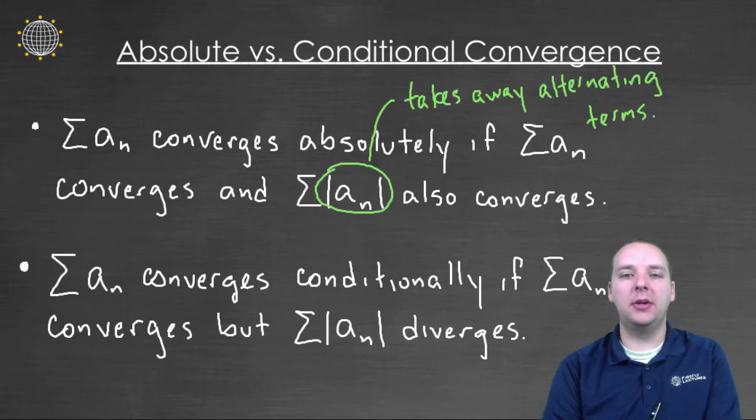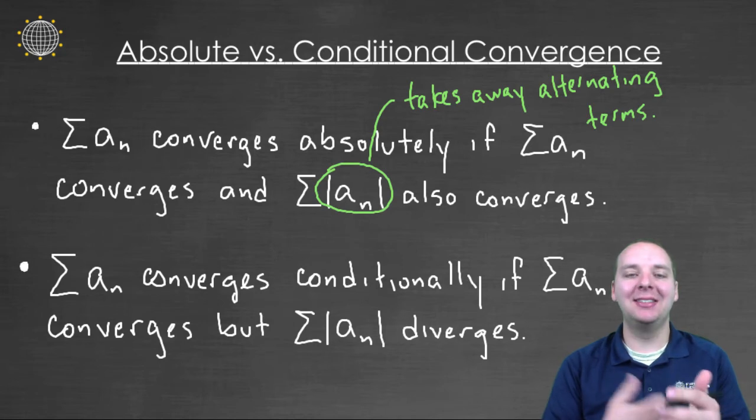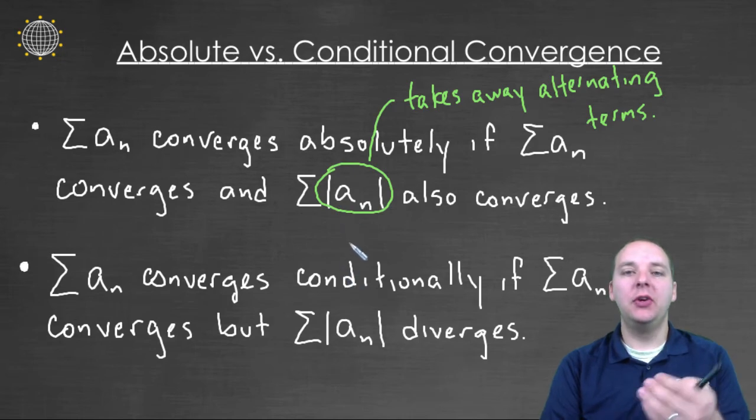Let me see if I can explain what's going on here behind the scenes. When you take the absolute value of the terms in your series, you're taking away any possibility of having negative terms in your series.